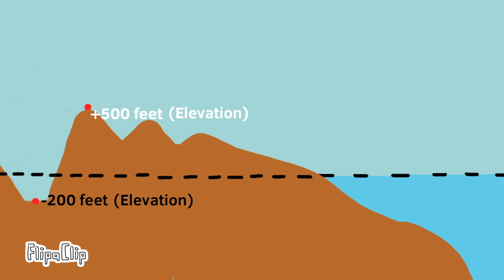The peak of this mountain or hill is 500 feet above sea level. That means the elevation is 500 feet. And the valley floor is 200 feet below sea level. That means that its elevation is negative 200 feet.